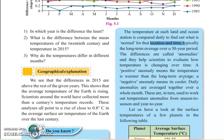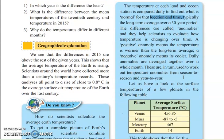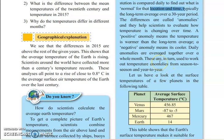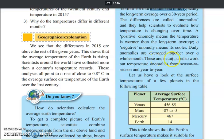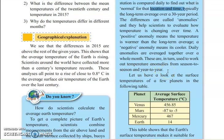Daily anomalies are averaged together over the whole month — each and every day the anomalies are calculated and an average is taken for the whole month. These are in turn used to work out temperature anomalies from season to season and year to year. All the monthly anomalies are calculated and averaged for the year, allowing season-wise, year-wise, and month-wise analysis of the temperature of a certain location.